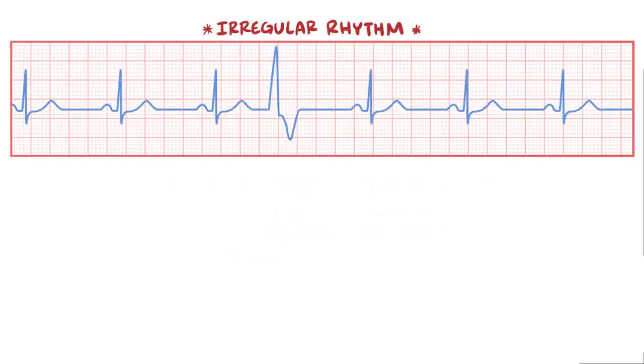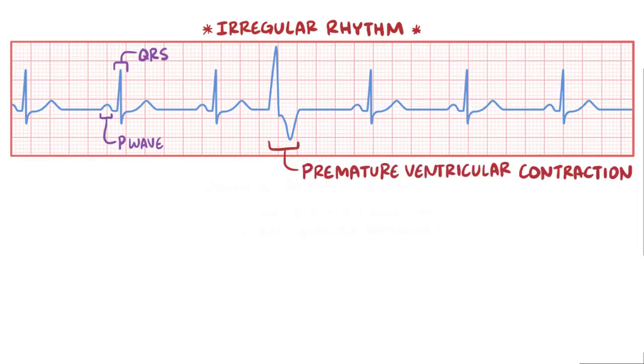Next you could check for changes in the sequence of the waves, most often involving the two depolarization waves, the P wave and the QRS complex. You can look to make sure that there's a P wave before every QRS complex, as well as a QRS complex after every P wave. For example, if there's a premature ventricular contraction, like this, then there might be a QRS complex without a preceding P wave.